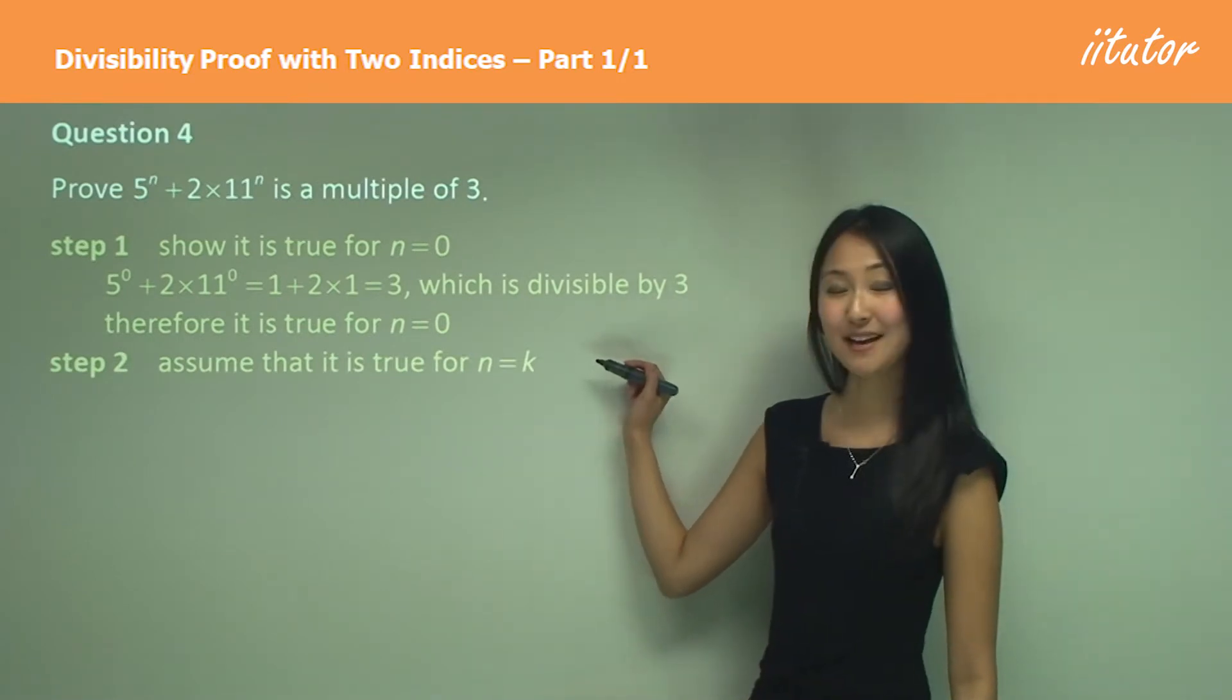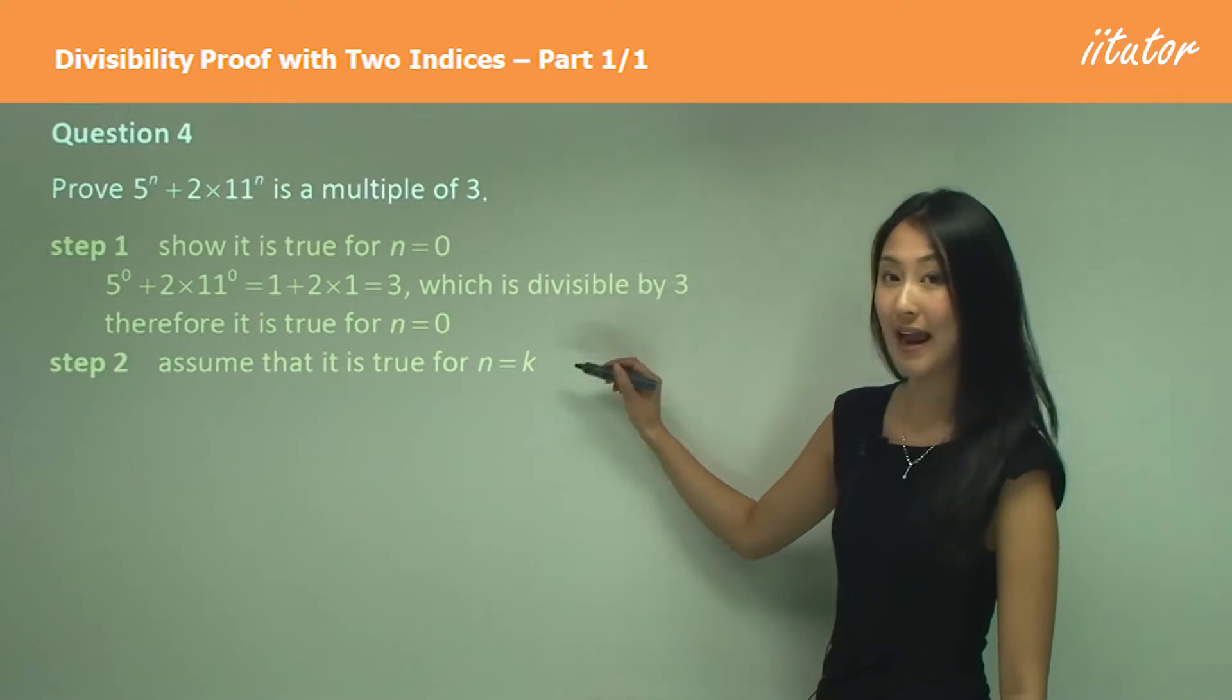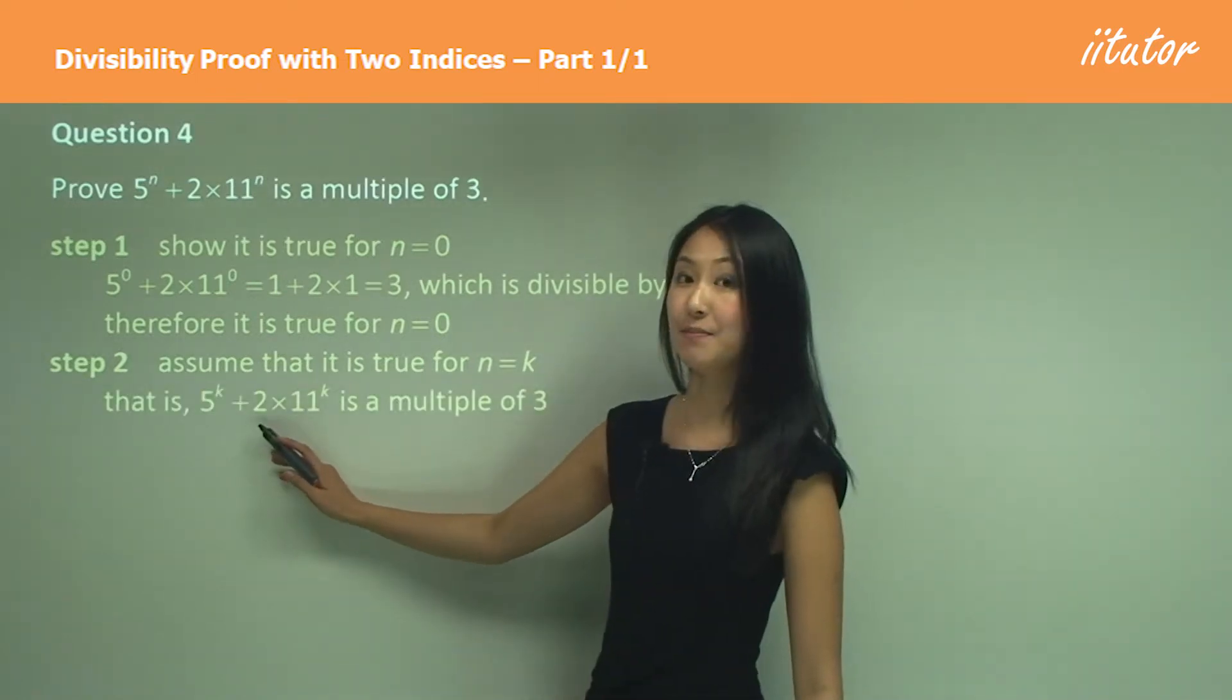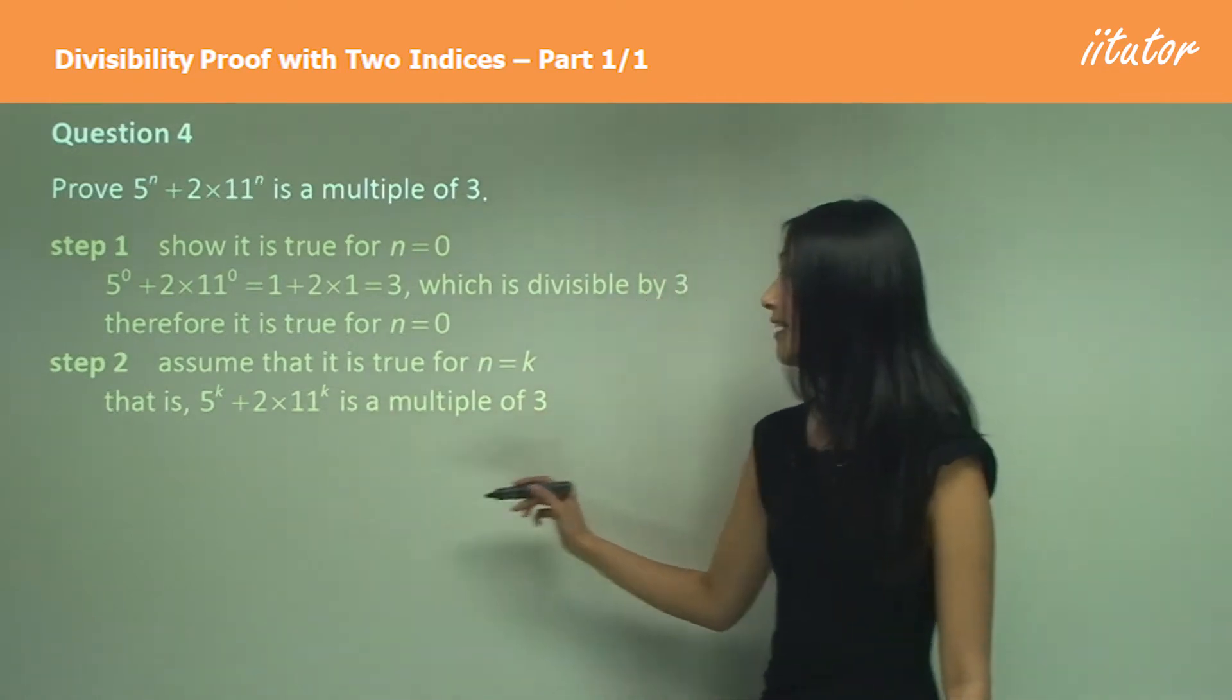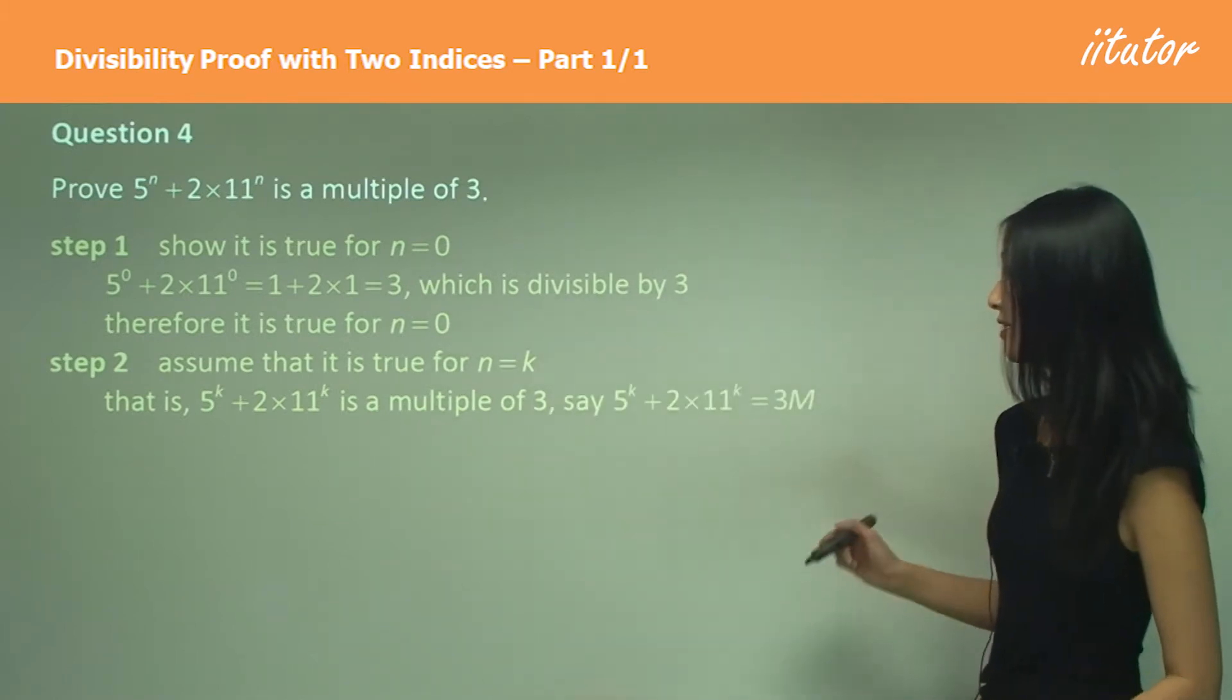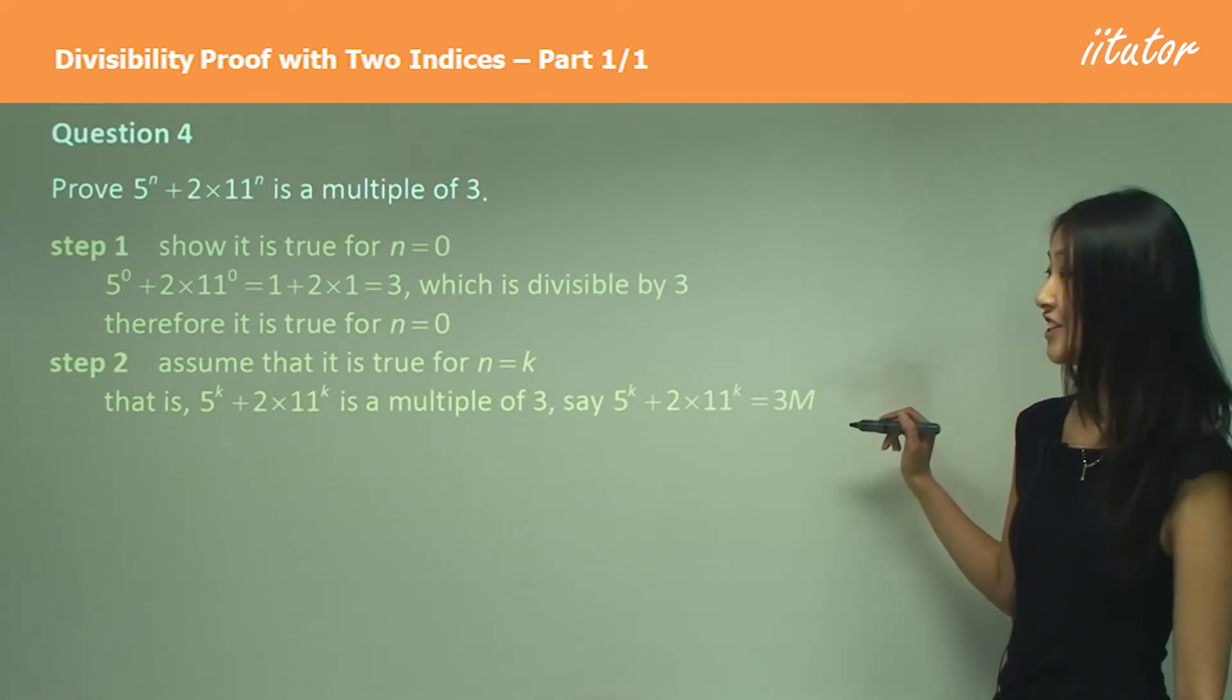Step 2 is our assumption, where we write assume it is true for n equals k. That is, when we have 5 to the power of k plus 2 times 11 to the power of k, it is a multiple of 3, which means we can write it as an equation: it equals 3m, where m is an integer.